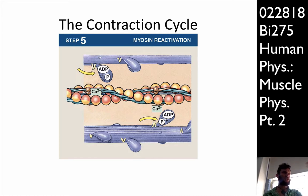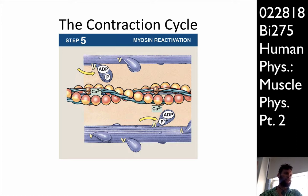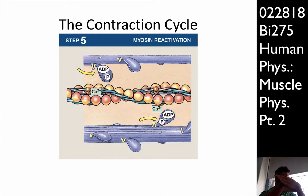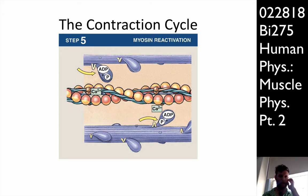We go through successive cycles of this until one of a few things happen: the calcium diffuses off and is sequestered back into the sarcoplasmic reticulum, we run out of ATP, or the muscle fiber gets fully contracted and there's no more room — the muscle fiber can't contract any further. Those are the conditions for termination of this contraction cycle.